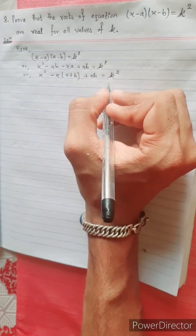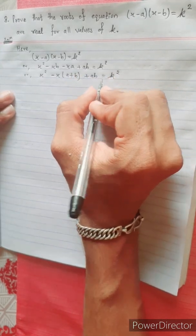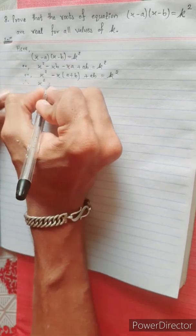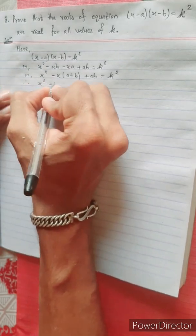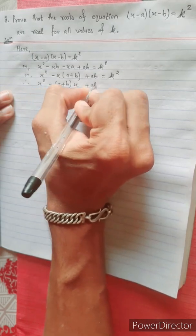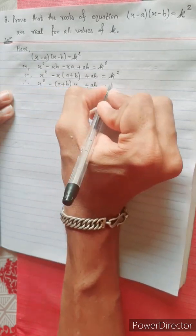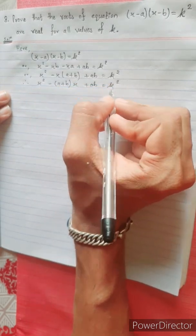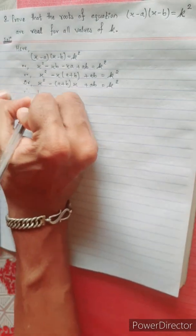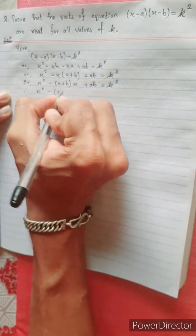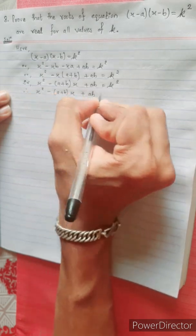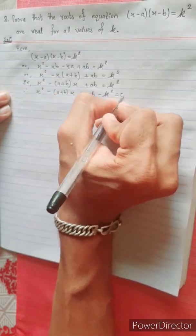This equation. Now, I am going to take the equation: x square minus (a plus b) x plus a b equals to k square. Now, I am going to take the equation: x square minus (a plus b) x plus a b minus k square equal to 0.